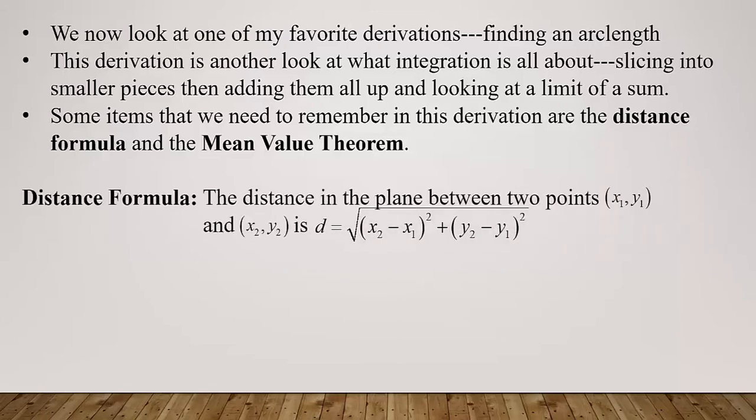Make sure you write this down in case you don't remember it. The distance formula states that if you have two points in the plane, (x₁, y₁) and (x₂, y₂), the distance between those two points is given by d equals the square root of the quantity (x₂ − x₁) squared, plus the quantity (y₂ − y₁) squared.